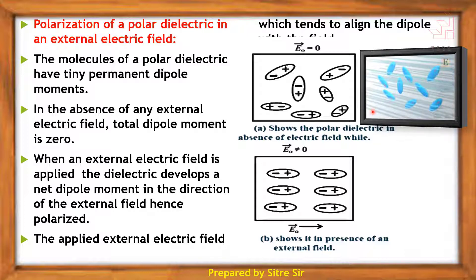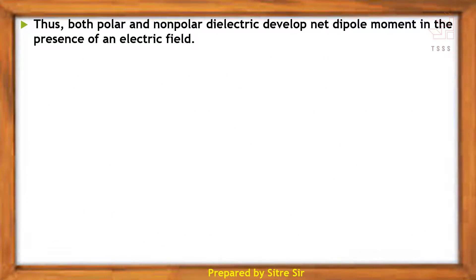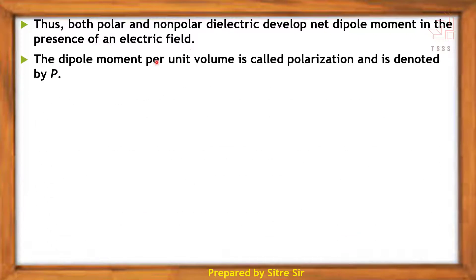In conclusion, both polar and non-polar dielectrics develop a net dipole moment in the presence of an external electric field. The dipole moment per unit volume is called polarization and is denoted by P.